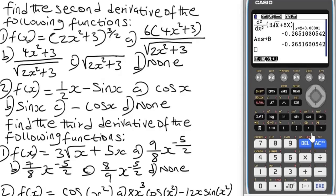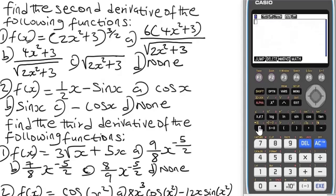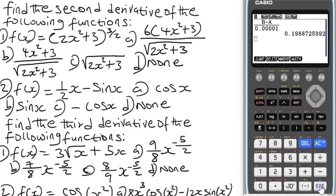Now for the last step, we're going to subtract A from B and divide by the constant. Press Alpha B minus Alpha A, over 0.000001 (five zeros). Press EXE. We get 0.19. Right now we're going to simplify the options — anyone that gives us 0.19 will be our answer.